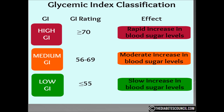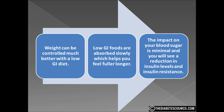Foods with a high GI are those which are rapidly digested and absorbed. This results in a yo-yo effect in blood sugar levels. Low GI foods are digested and absorbed in a gradual way. This produces a much more even rise in blood sugar and insulin levels. Research has proven this much more beneficial to the health of those with diabetes, both type 1 and type 2.